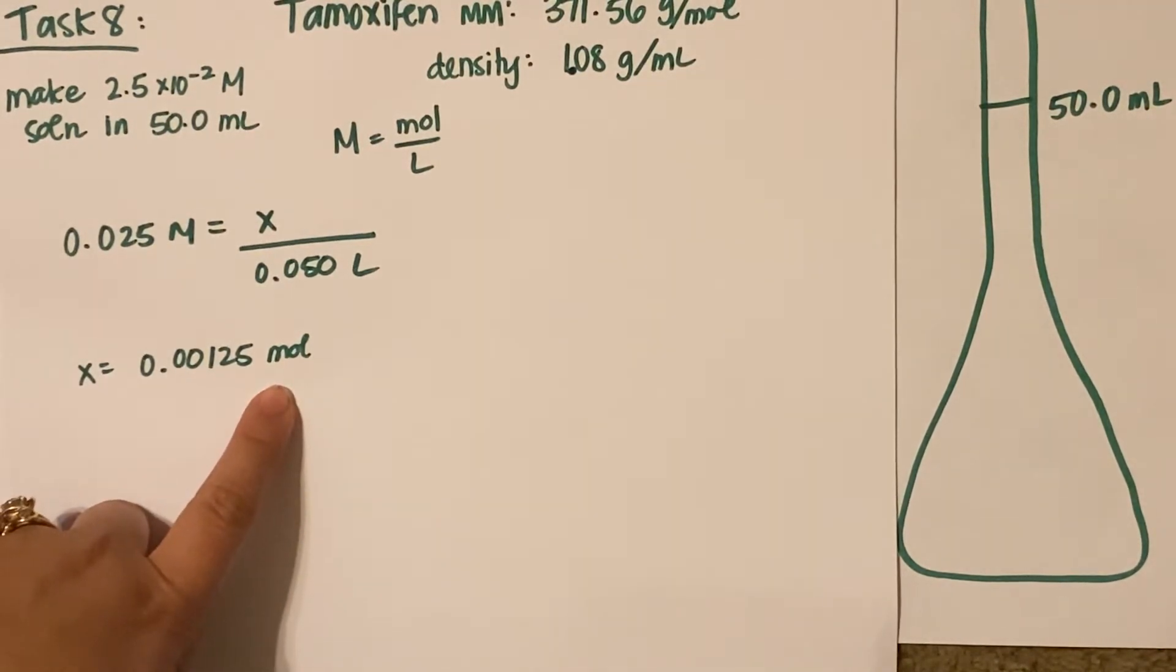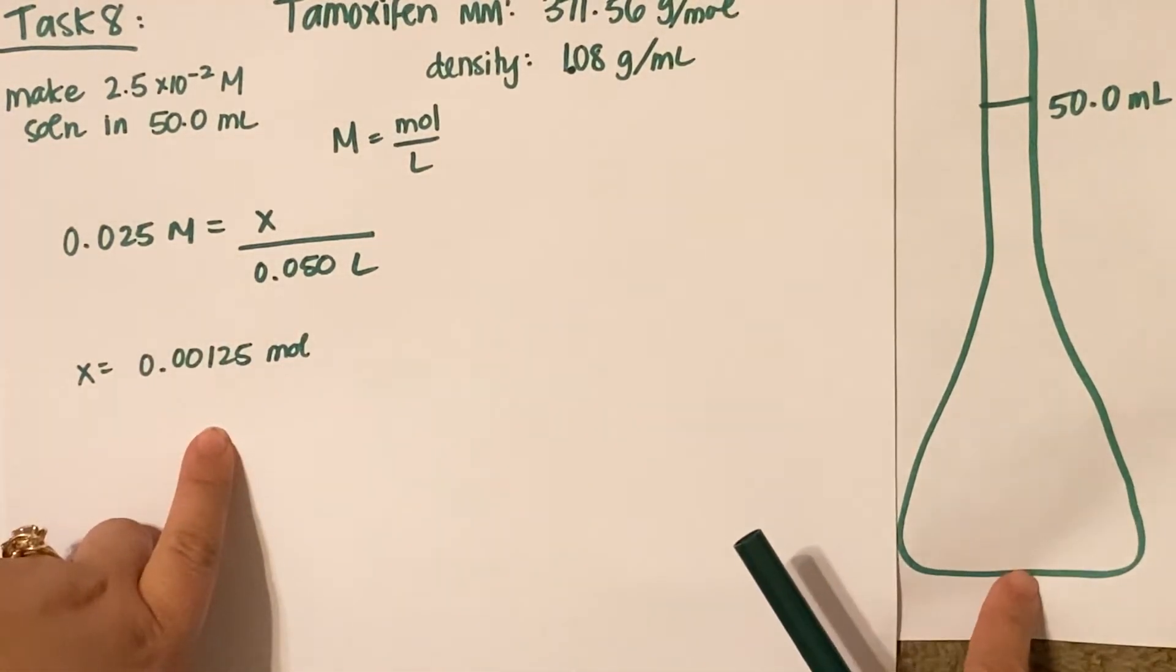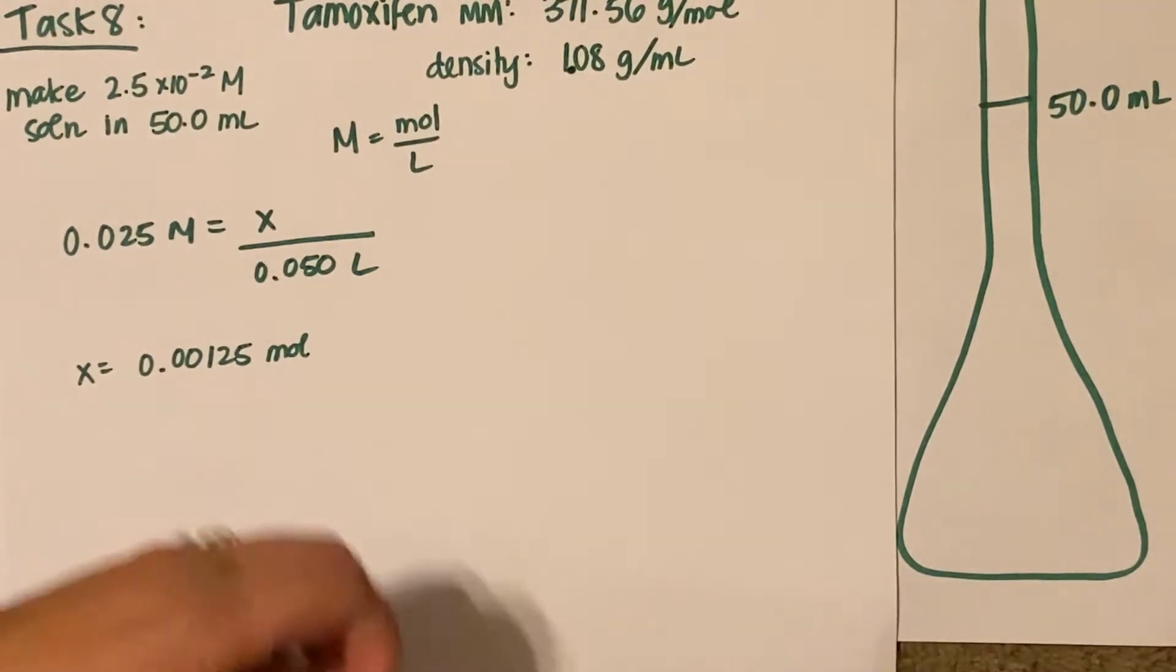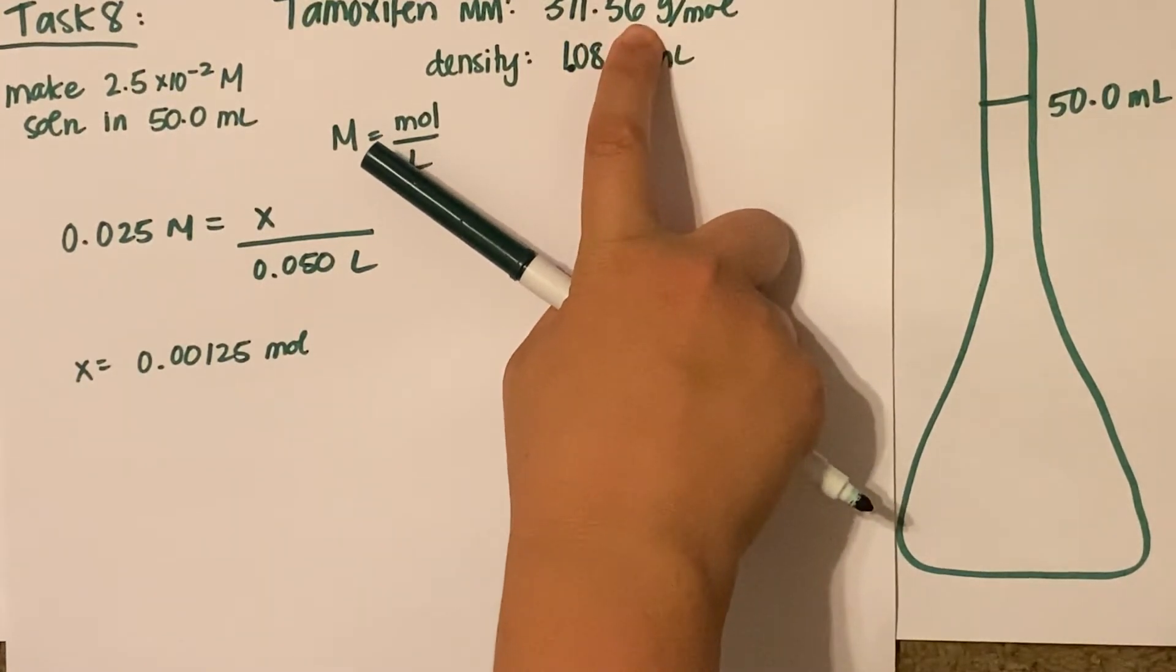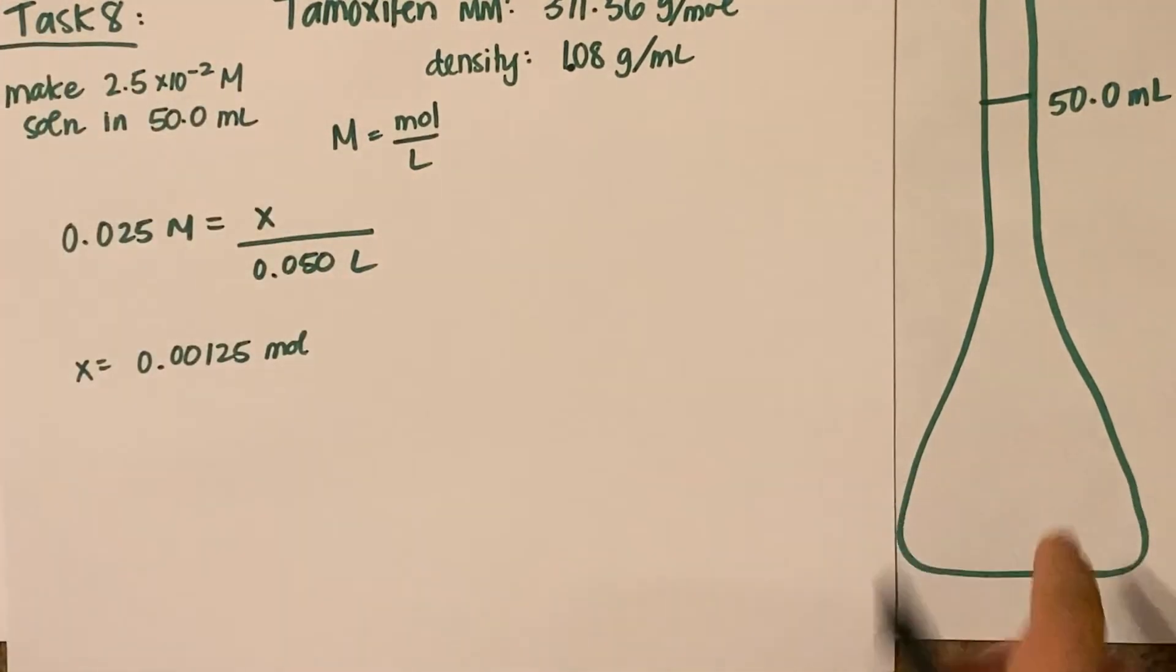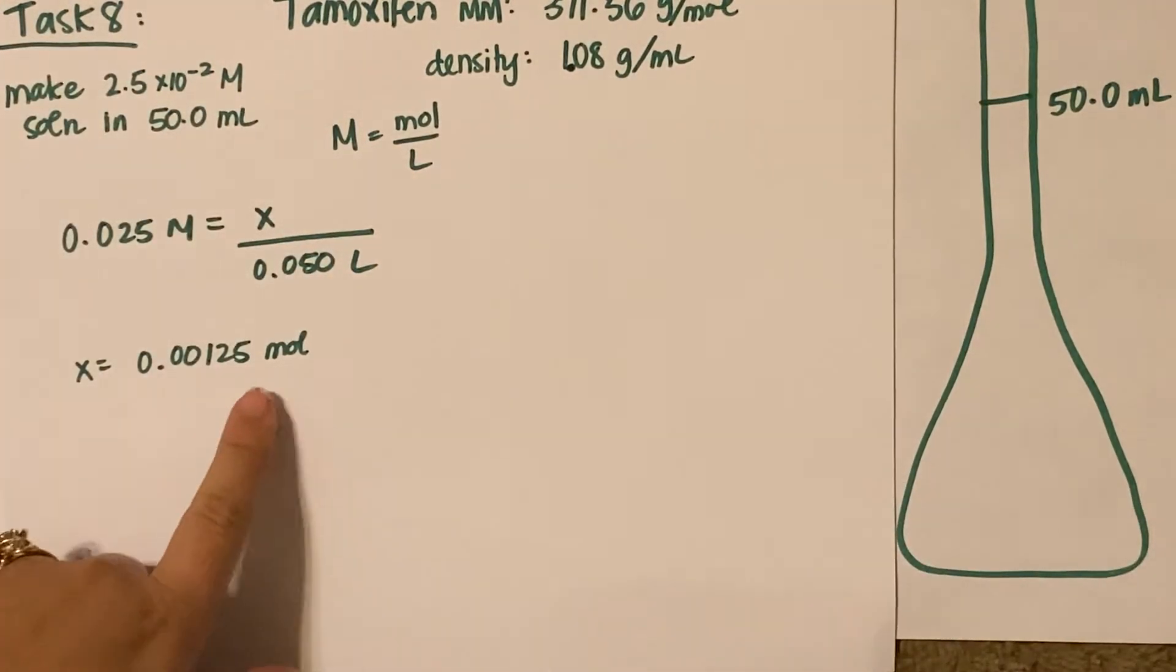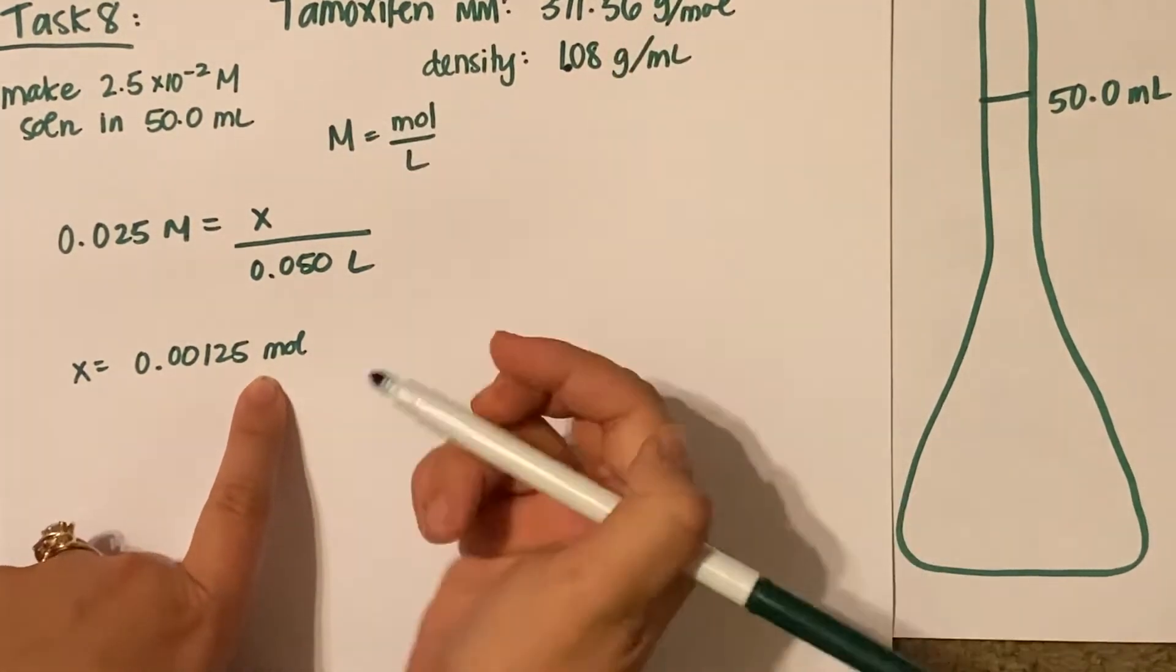Now I have my number of moles of my drug, but that doesn't help me. I can't just go to the lab and measure out this many moles and add it to my volumetric flask. I have to convert it with my molar mass to figure out my number of grams. Then I can take it to a scale and add that amount of grams exactly to my flask. This is really easy.